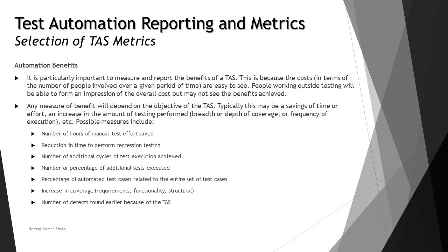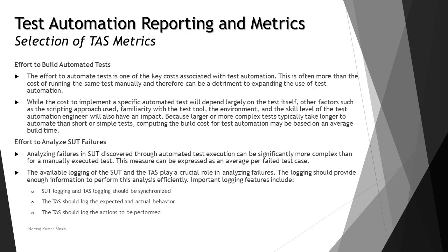Some possible measures of automation benefit are: number of hours of manual test effort saved, reduction in time to perform regression testing, number of additional cycles of test execution achieved, percentage of additional tests executed, percentage of automated test cases relative to the entire set, increase in coverage including requirements, functionality, and structural coverage, and number of defects found earlier because of automation. These are comparative measures you can showcase to the organization to show how much benefit automation is achieving.